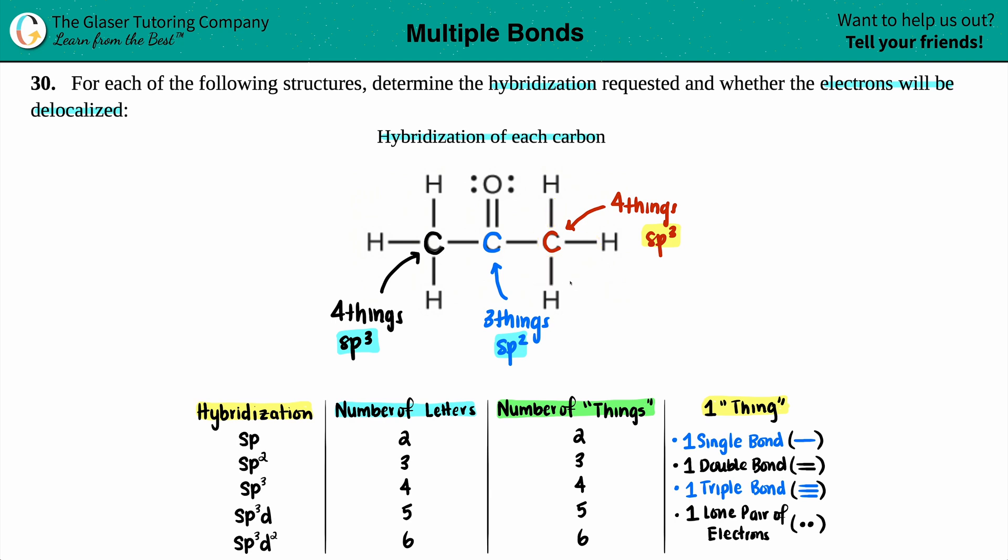Now we're going to answer the second part. We need to know whether those electrons will be delocalized. If electrons are delocalized, that means they are not going to stay put. If they're delocalized, they're not localized, they're not staying in one place. When we're looking for electrons that are delocalized, chances are you're looking for electrons that are in double bonds.